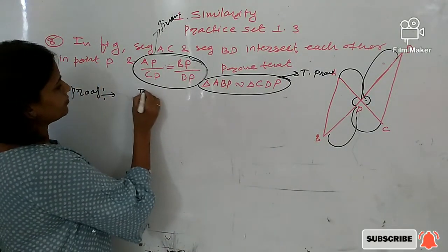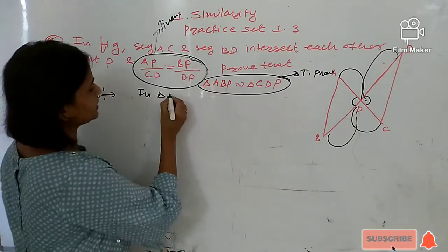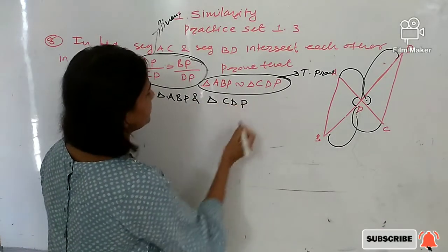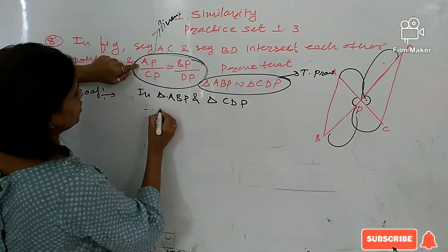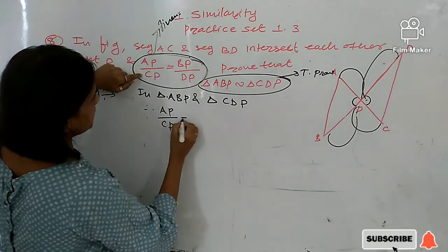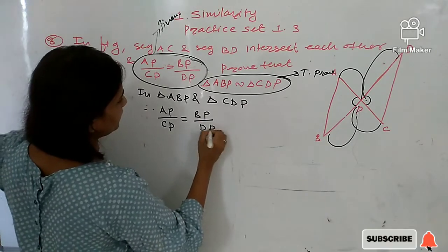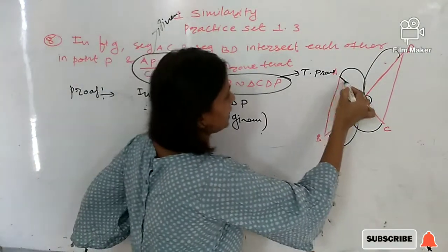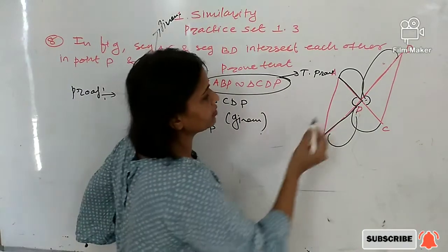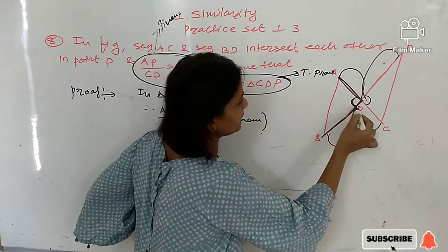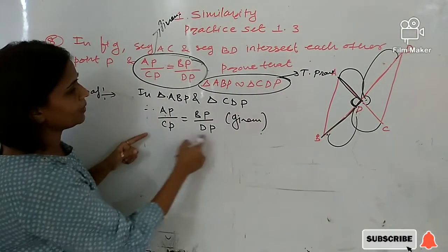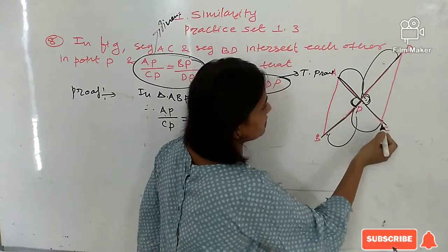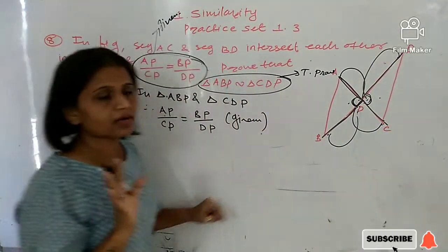Write the proof. The triangles are triangle ABP and triangle CDP. First, write the given ratio: AP upon CP is equal to BP upon DP — it is given. Now, AP and BP are two sides, so the angle included by AP and BP is angle APB. And CP and DP — the angle included by CP and DP is angle CPD.